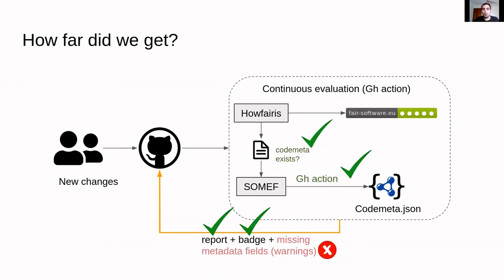What we have been able to achieve is generating the GitHub Actions that automate one of the tools — the other was already automated. Actually, just before starting this meeting we managed to complete the workflow — at least the first implementation of the full workflow — so we have it working end to end. However, we didn't have enough time to produce a report with the missing metadata fields, which is something we also wanted to add.